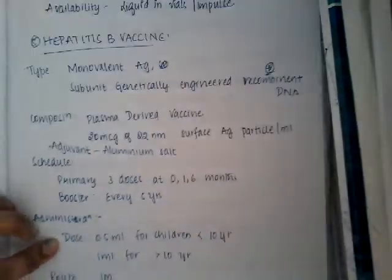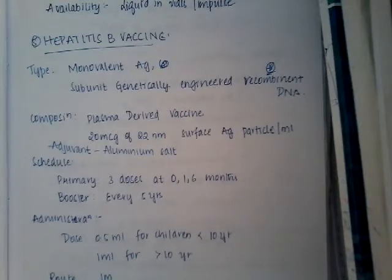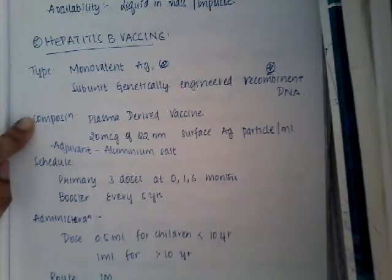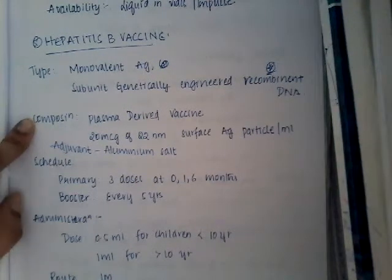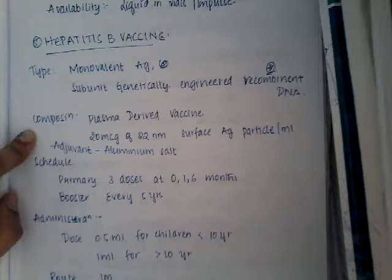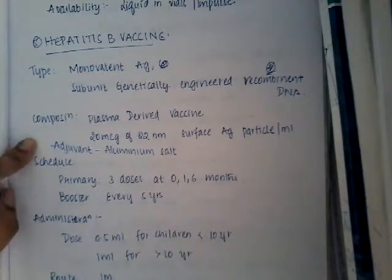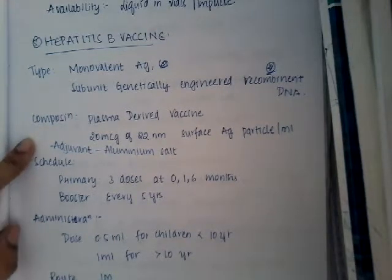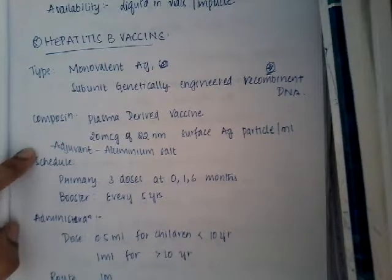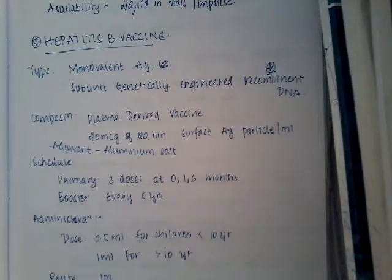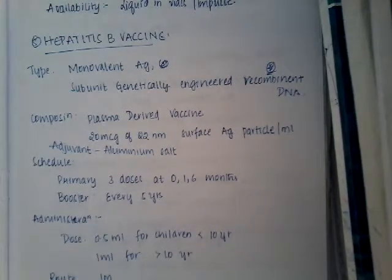The composition of Hepatitis B vaccine is a plasma-derived vaccine which contains 20 mcg of 22 nanometer surface antigen particle per ml. The adjuvant used in Hepatitis B vaccine is aluminium salt.